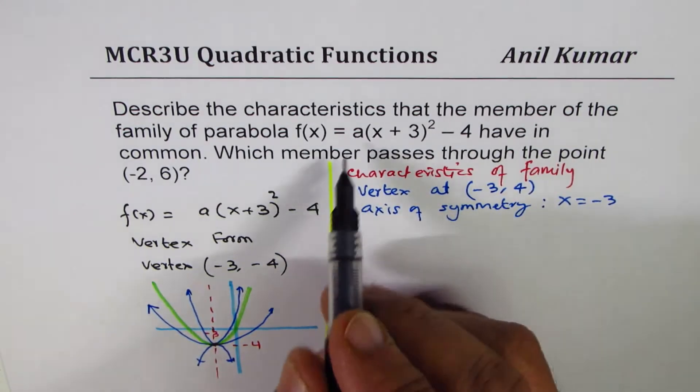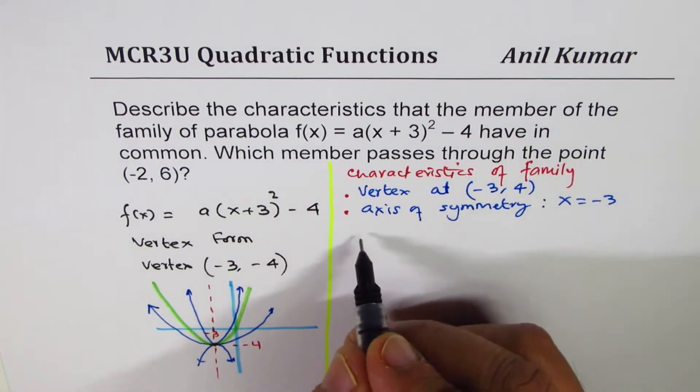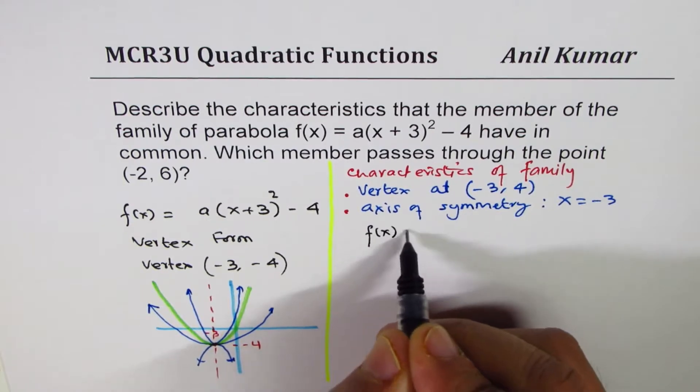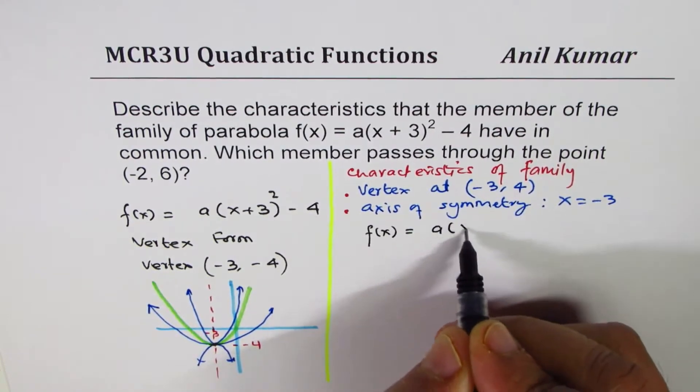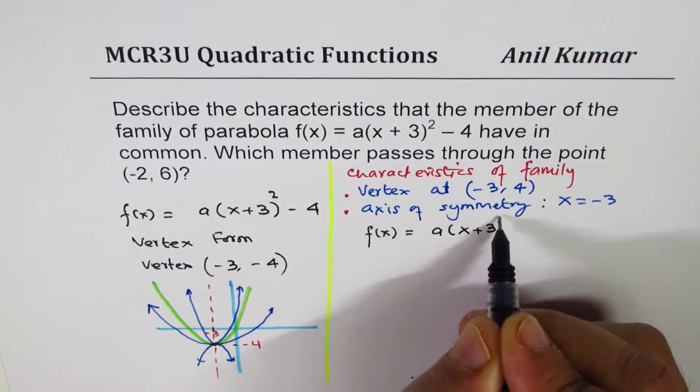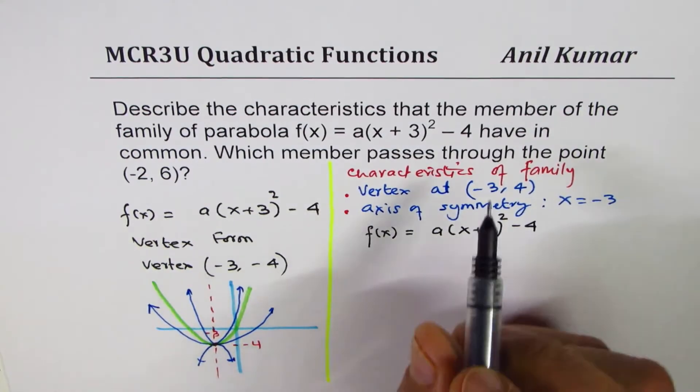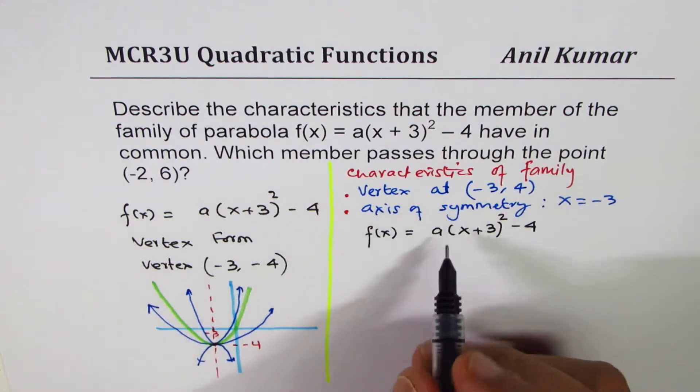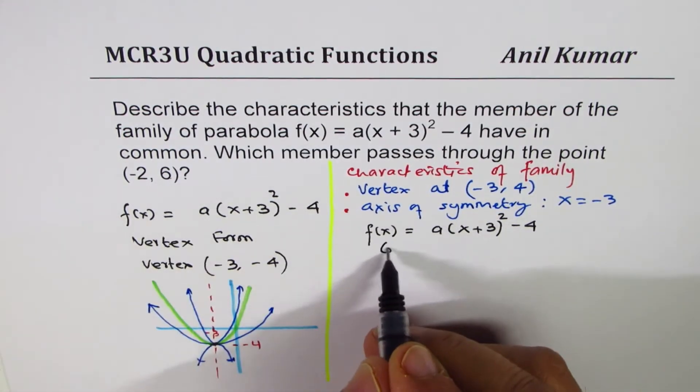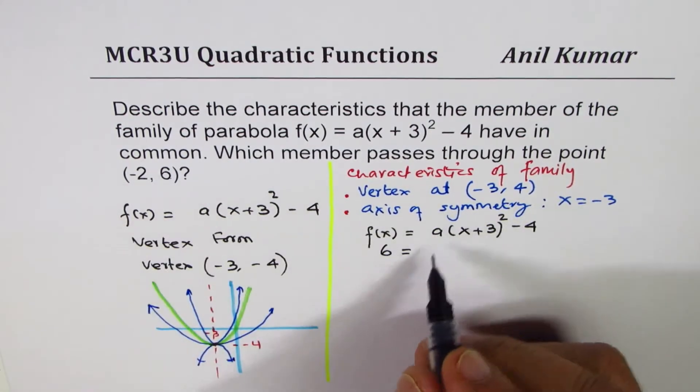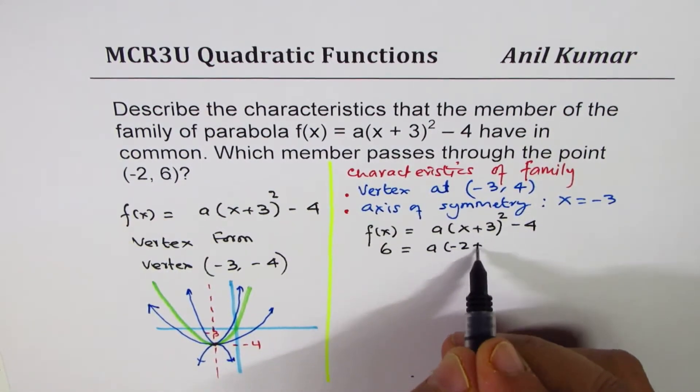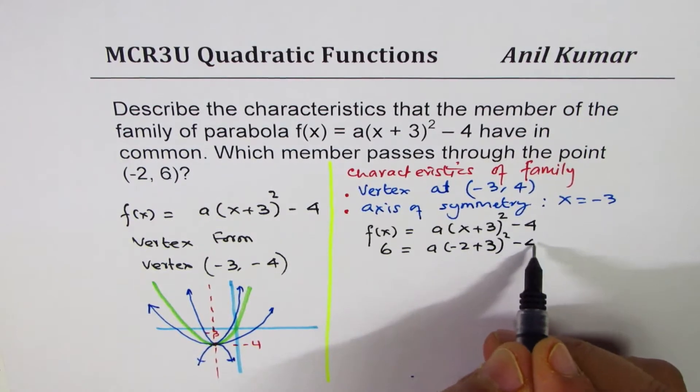So we have to find the value of a. So the function f(x) is basically equals to a(x + 3)² - 4. When I say (-2, 6) is the point, then 6 is the y value. And x value is -2, so we have 6 = a(-2 + 3)² - 4.